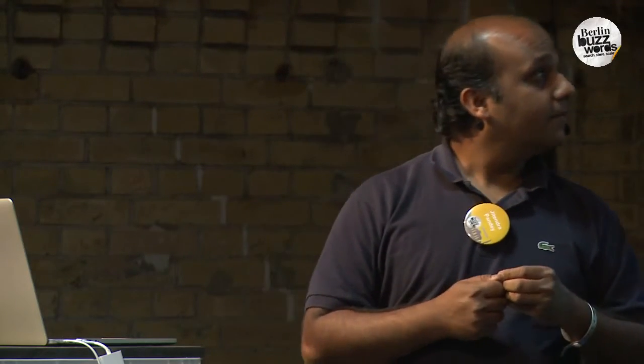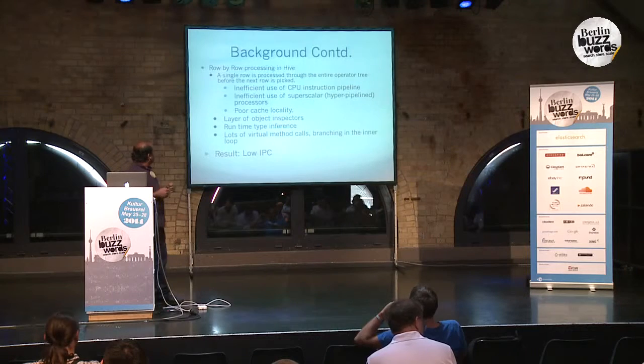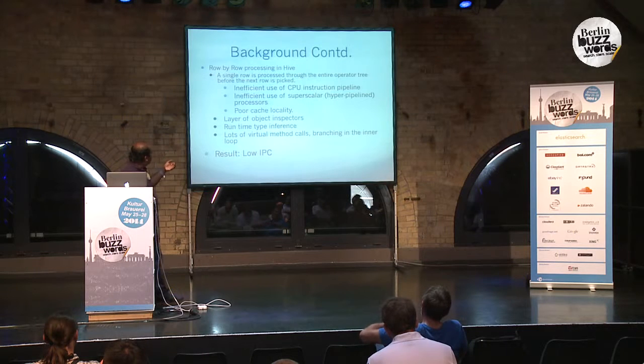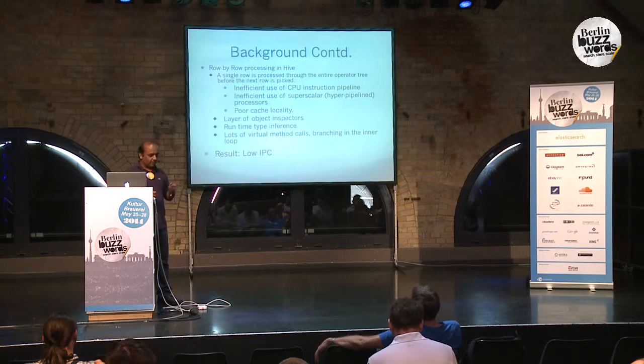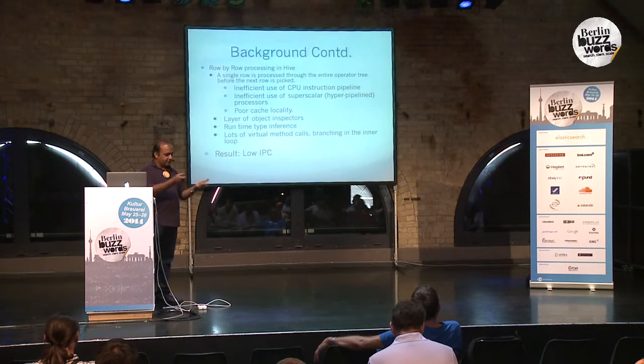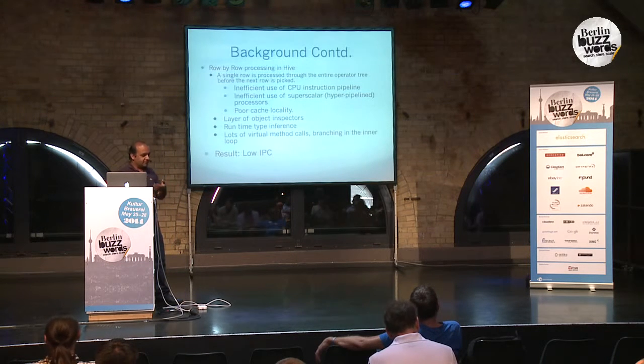Superscalar processors have parallel pipelines in which they can push instructions in parallel, provided there is data independence between them — that is, no data hazard. This kind of execution that Hive has is also not very good for cache locality, particularly instruction cache locality, because the number of instructions in an operator tree is pretty huge. Also for data locality, because you are just loading one row in the cache and then going through the whole thing, so data prefetching and those optimizations are not really useful here.